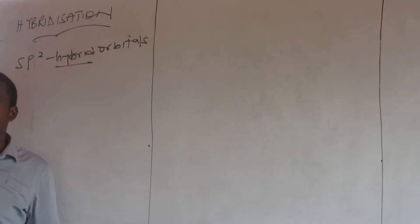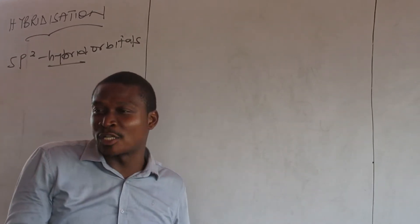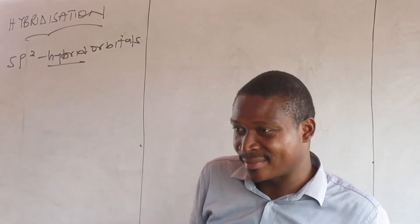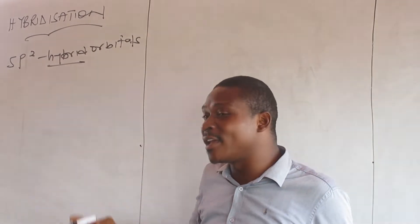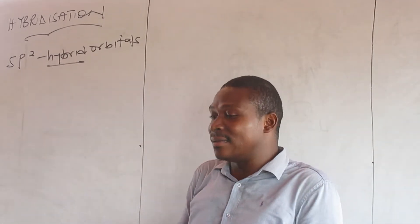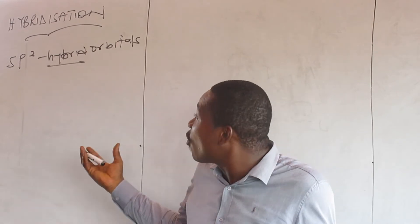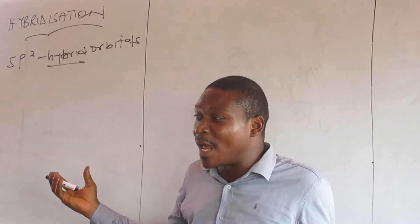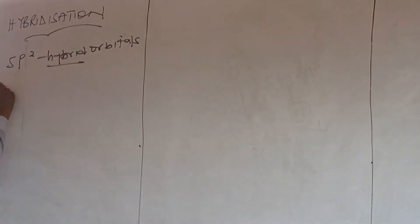As I said, what controls hybridization is a central atom, not what is bonded to it. So if I use carbon here, the carbon in this state cannot undergo sp2. So it has to be something like boron. So let's look at it.